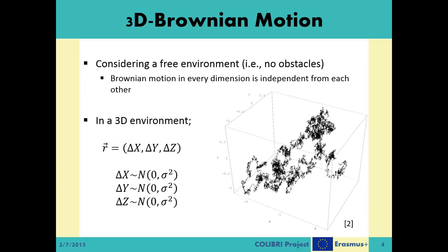Considering a homogeneous environment with no barriers, no borders, or any kind of reflecting surfaces, the Brownian motion of a particle in one dimension is independent from its movements in other dimensions. So, considering the simple Brownian motion, the total displacement of a moving object in a 3D environment is a vector comprised of three random variables, delta x, delta y, and delta z, for x, y, and z dimensions respectively. This is not only limited to a 3D environment; we can generalize this formula to any dimension we like. But for the sake of simplicity and realism, we will focus on a 3D environment.